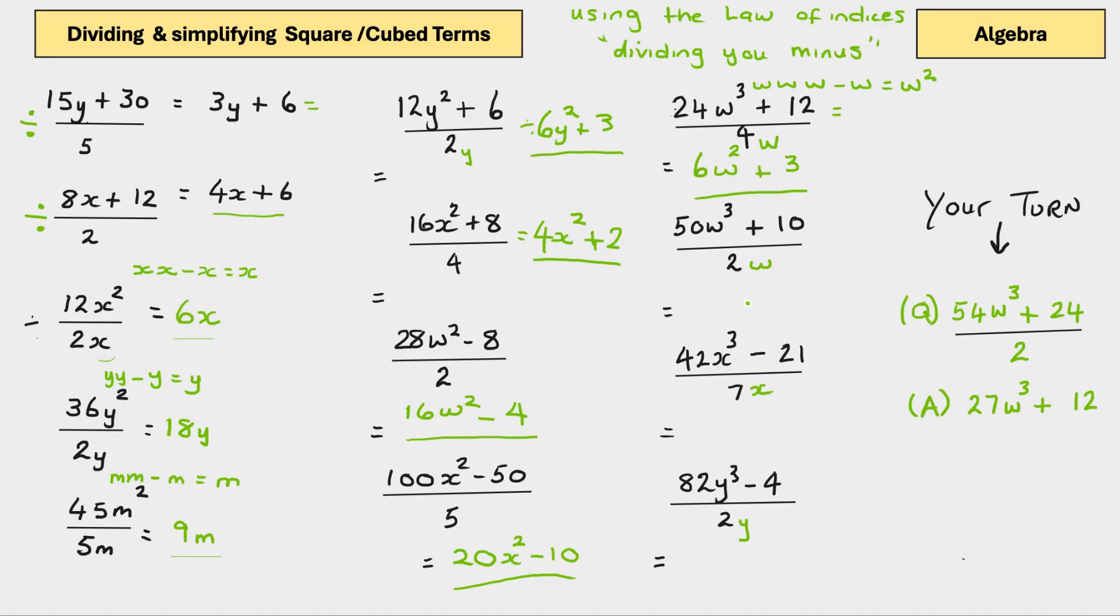Let's do another one. Same again. 50w cubed plus 10 divided by 2w. So, what I would do first is 2 divided by 50. Obviously, that's 25. So, we've got 1 w. We've got 3 w's. And we've got to subtract. So, that's now going to be 25w squared plus 2 divided by 10. That's 5.